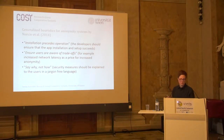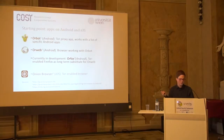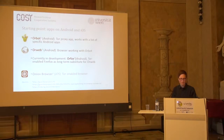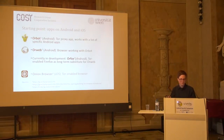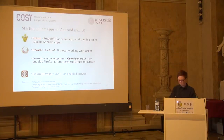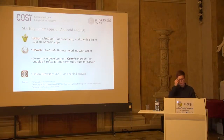As my starting point — there are a lot of anonymity apps for mobile devices — I want to start with Orbot on Android, the Tor proxy app, and probably Orweb, the browser which works over Orbot. Currently in development is Orfox, which is a Tor-enabled Firefox, a long-term substitute for Orweb. I've put the links in the slides if you're interested. There's also the Onion Browser for iOS, which is open source but costs about one euro. I'm more interested in the apps for Android.